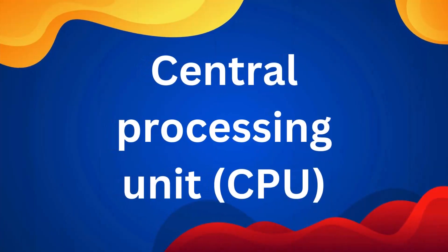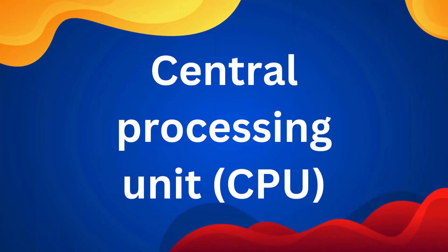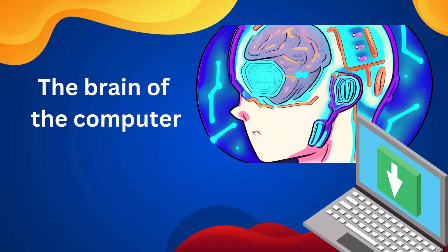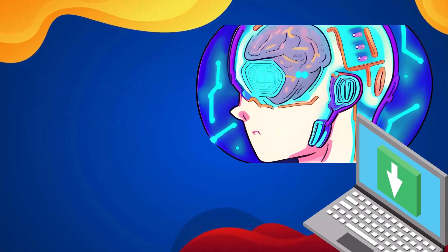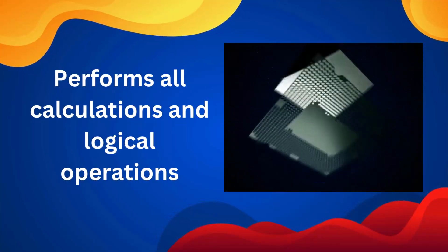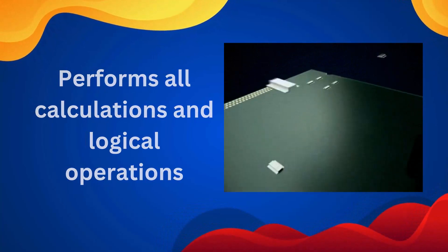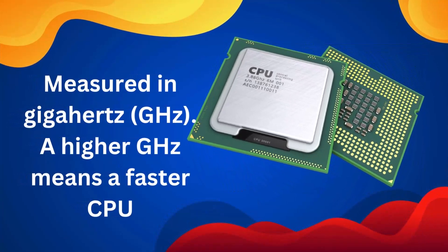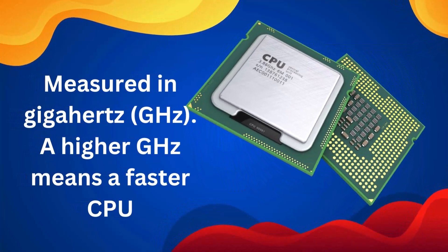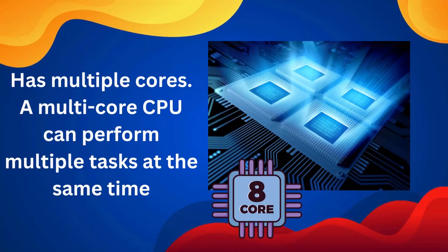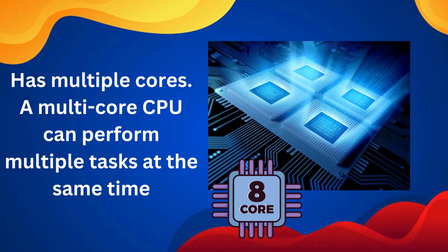Central processing unit, CPU: the brain of the computer. It performs all calculations and logical operations. It is measured in GHz — a higher GHz means a faster CPU. The CPU has multiple cores, and a multi-core CPU can perform multiple tasks at the same time.